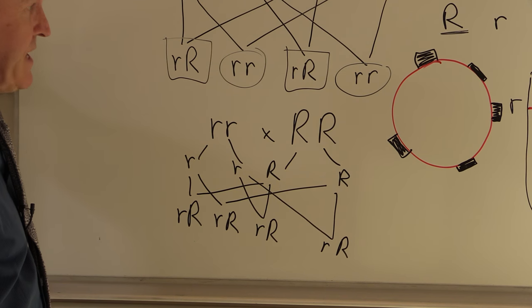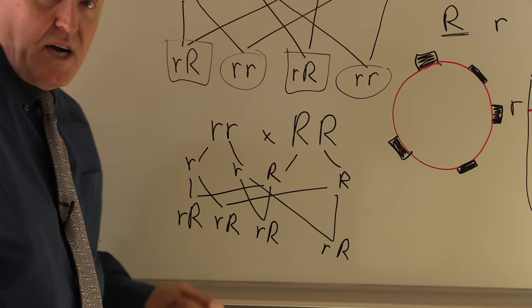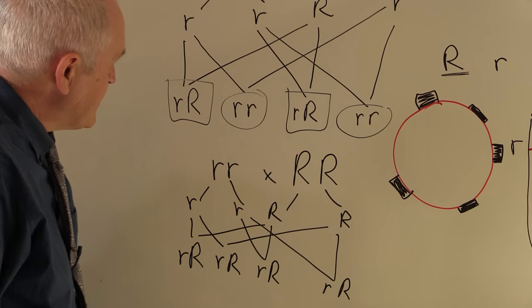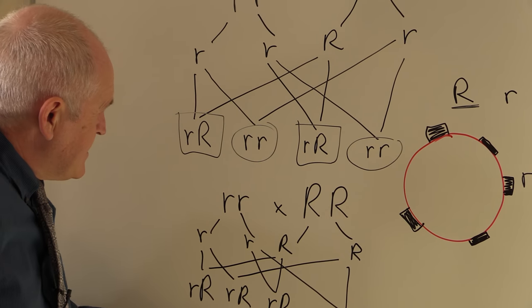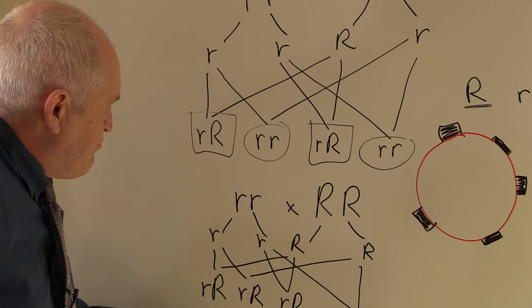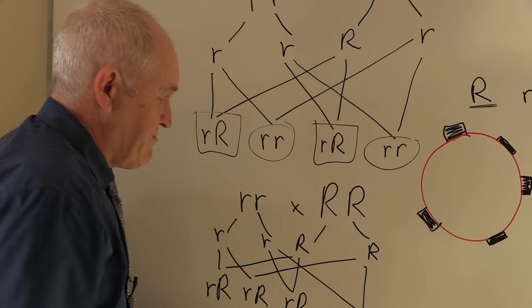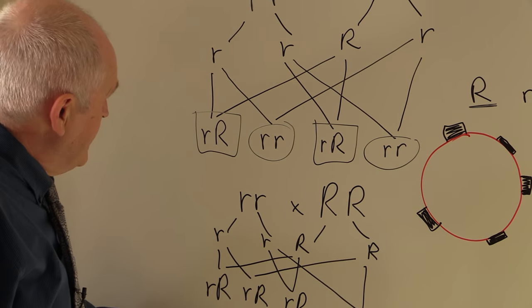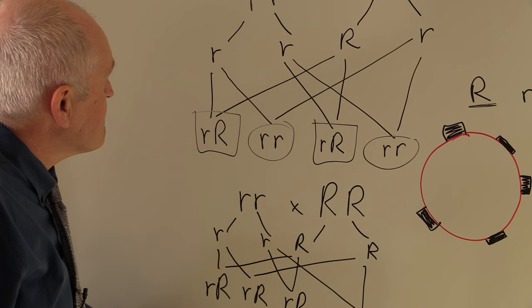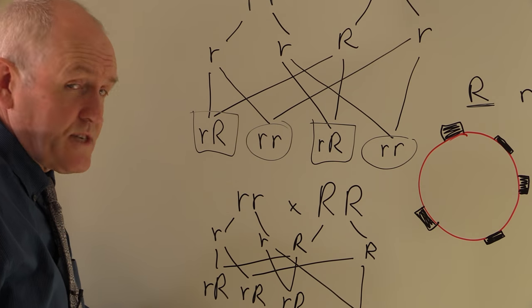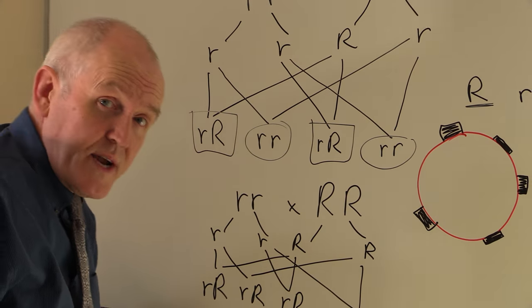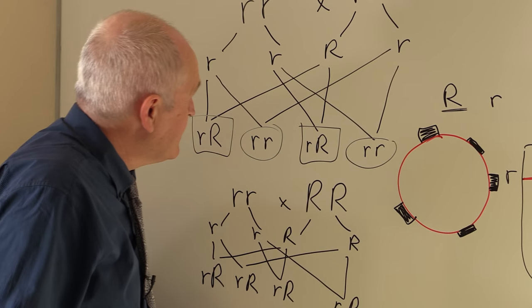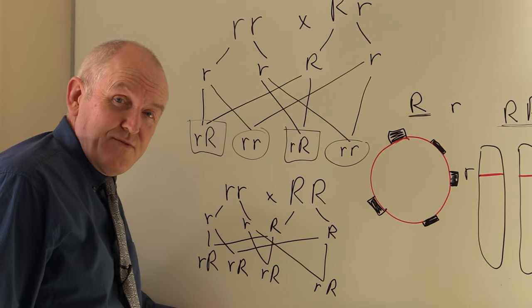So the Rhesus factor, really quite simple. It's either there or it's not. It's coded for by a single dominant gene which may be present in homozygous or heterozygous form in the father. So consider Rhesus factor incompatibility whenever we have a Rhesus negative mother and a Rhesus positive father.